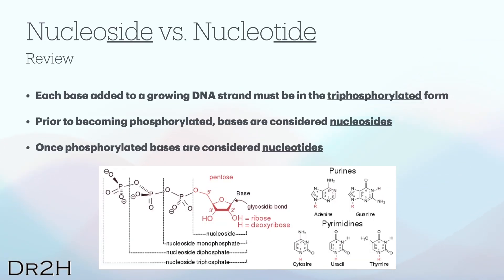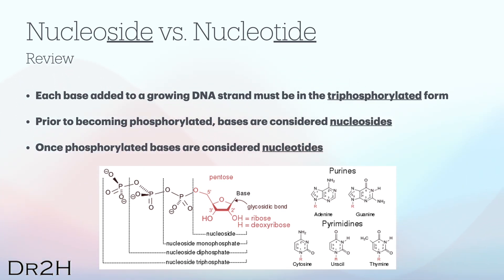Before we move on, let's have a quick review on the differences between nucleoside versus nucleotide. During the DNA replication or polymerization process, each base added to a growing DNA strand must be in a triphosphate form. A nucleoside is composed of two components — a nitrogenous base and a sugar molecule — and it lacks a phosphate group. A nucleotide is composed of three components: a nitrogenous base, a sugar molecule, and one or more phosphate groups.